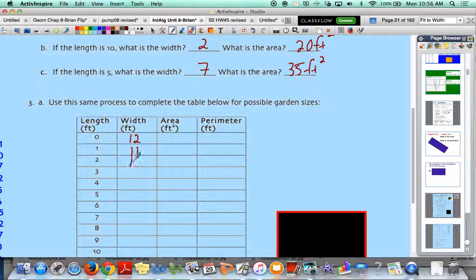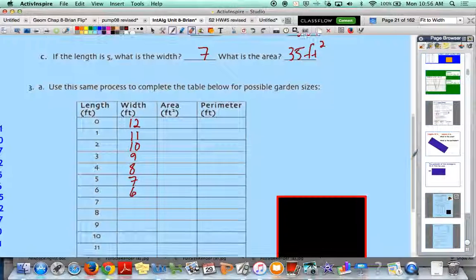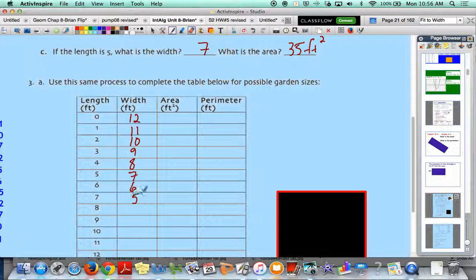If the length is 1, then the width would have to be 11. Again, one length and one width have to add up to 12. If the length is 2, then the width is 10. If the length is 3, then the width is 9. And then 8. 4 plus 8 is 12. And then 7. Do you notice a pattern here? Hopefully you do. Going down by 1 each time. As the other ones go up by 1 each time, these are going down by 1. Because the length and the width has to stay constant, adding up to 12.